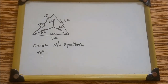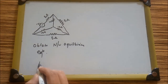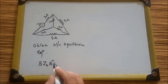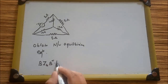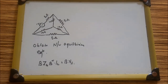Today we will see a numerical of graph theory. The numerical is: obtain the network equilibrium equation of a given circuit. The network equilibrium equation formula is B·ZB·Bᵀ·IL = B·Vs, where B is the tie-set matrix, ZB is the impedance, Bᵀ is B transpose, IL is the load current, and Vs is the voltage source.